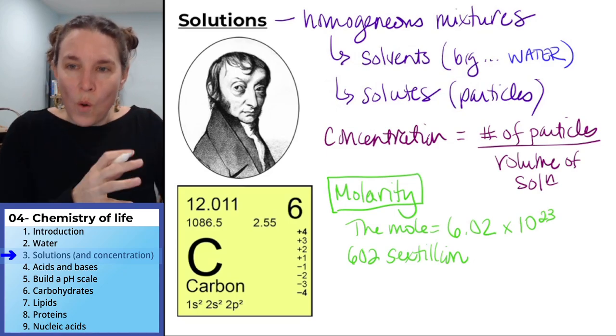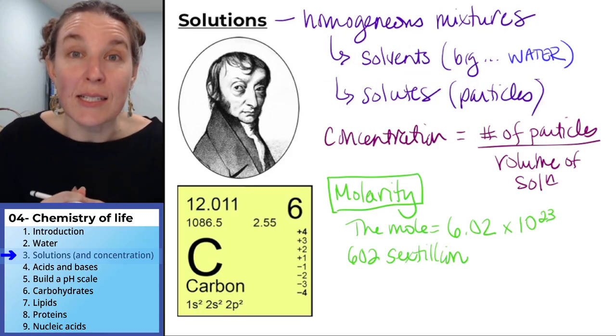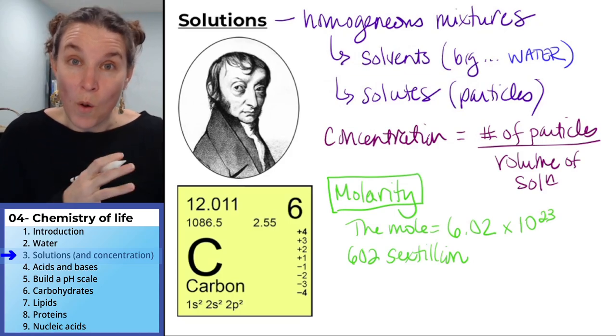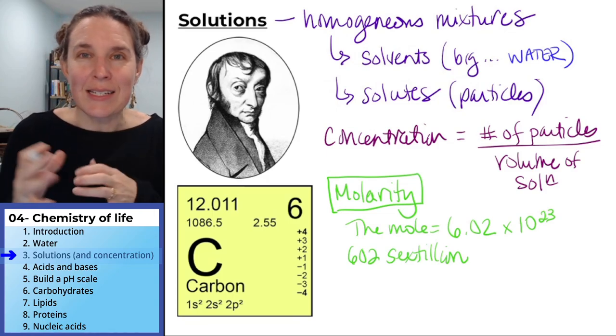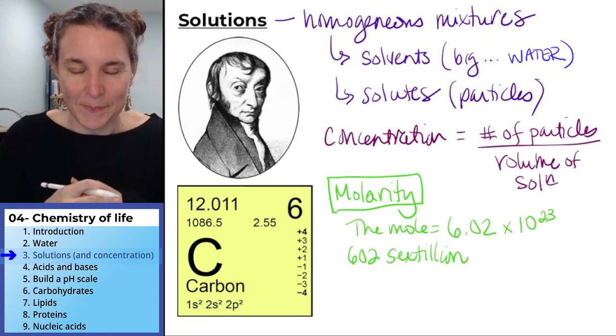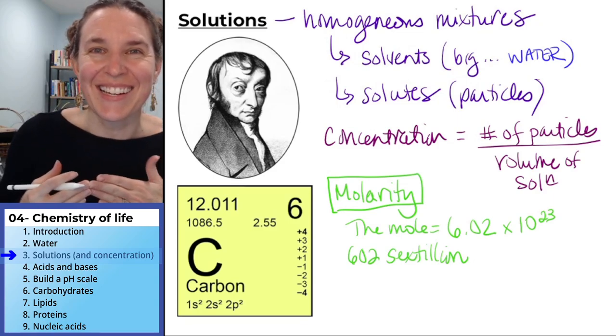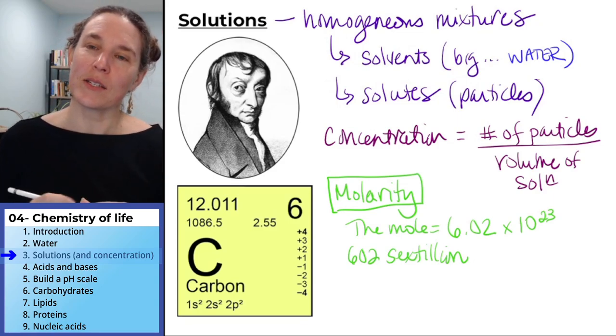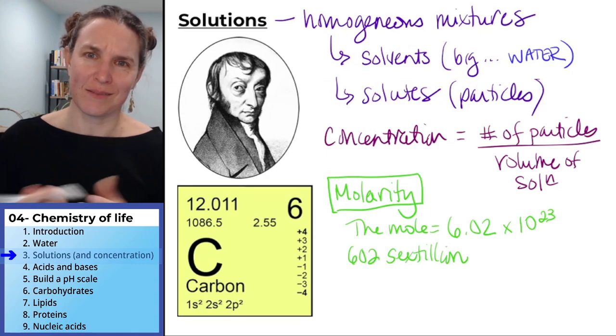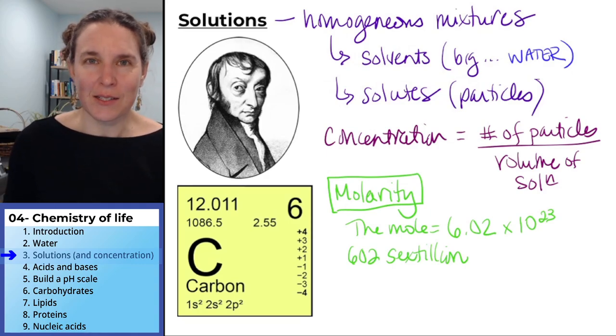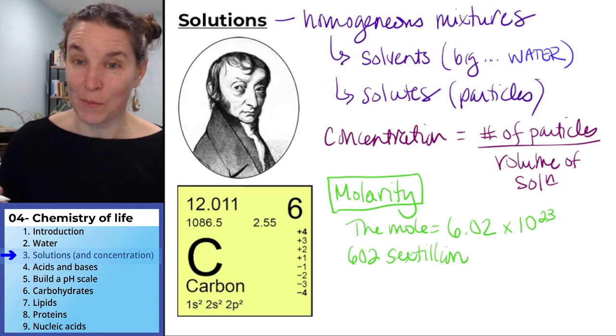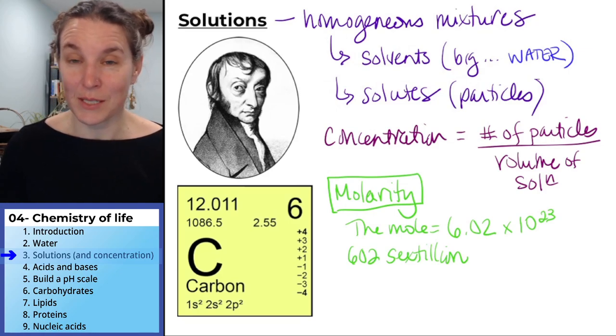A mole is like a dozen, except a mole is 602 sextillion things and a dozen is 12 things. You can decide, do you want a mole of donuts or do you want a dozen donuts? Who even asks a question like that? Take a mole. Thank you very much, Mr. Avogadro.